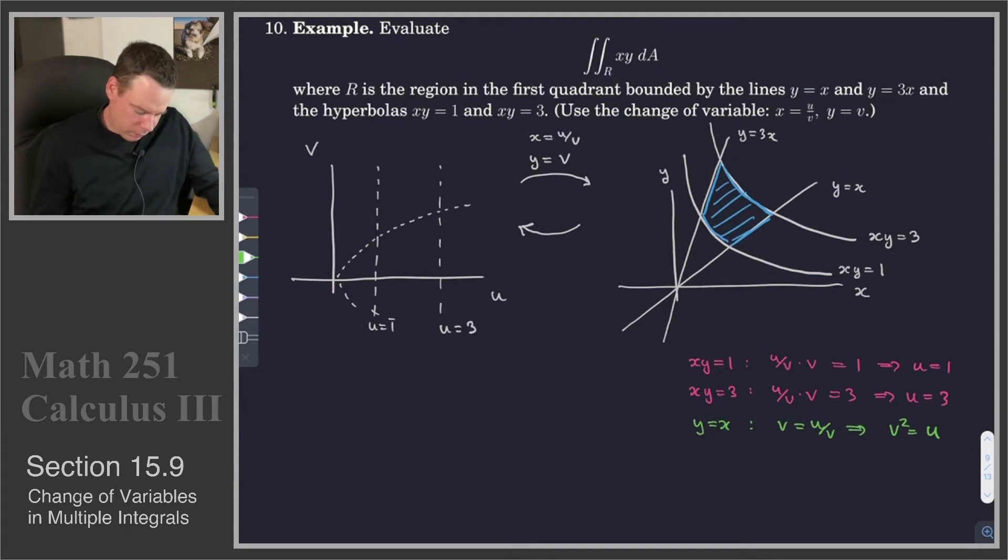And we also have y equals 3x. So, that's v is equal to 3u over v. Or, v squared is equal to 3u. And this is another parabola opening along the u axis. It's just a little bit wider this time.